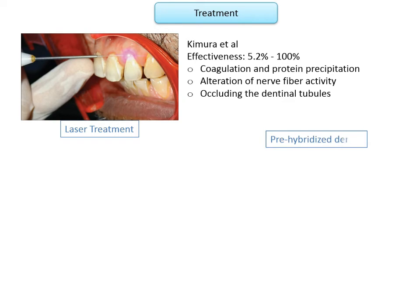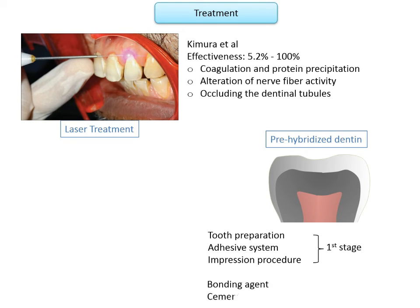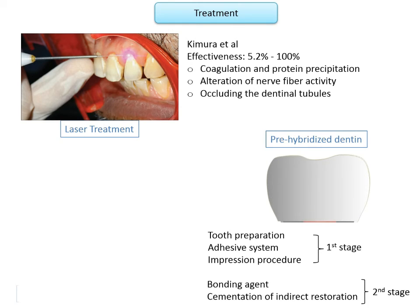Post-cementation hypersensitivity may occur after a newly cemented restoration — such as a crown, inlay, or onlay — is placed, presenting as short sharp pain to thermal or chemical stimuli. In the prehabituated dentine technique, the adhesive system is applied and light-cured immediately after tooth preparation. Prior to final cementation, a new layer of bonding agent is applied without light curing. Teeth treated with this immediate dentine sealing technique tolerated thermal and functional loads better than teeth sealed only at restoration placement.